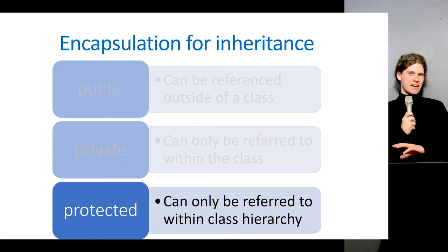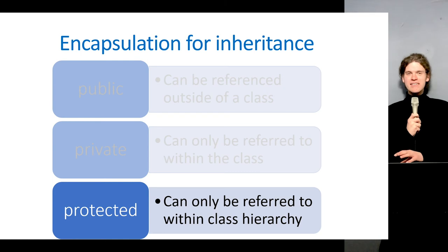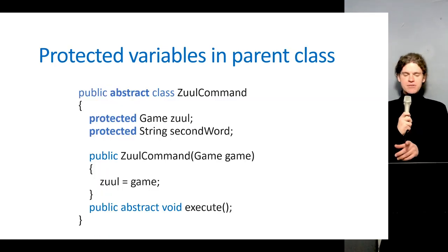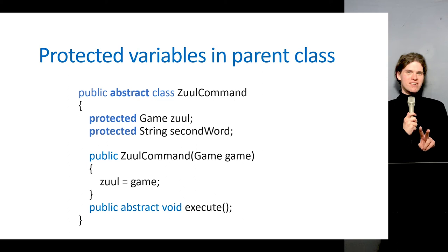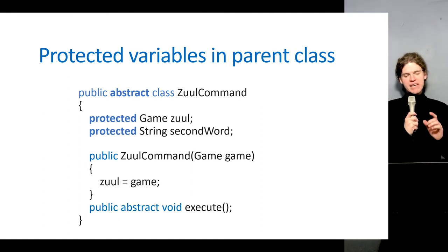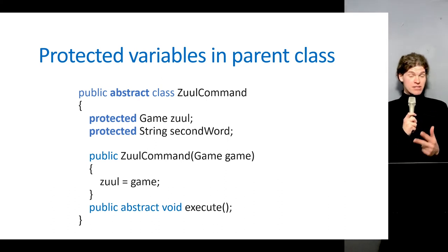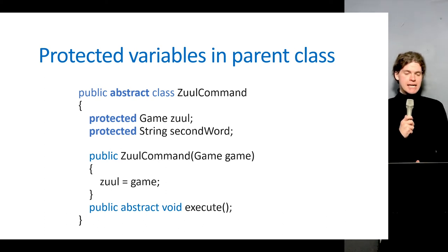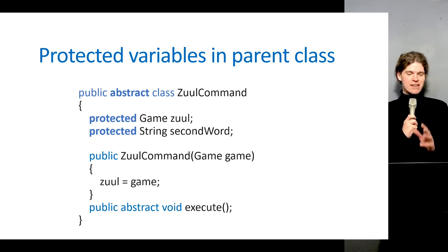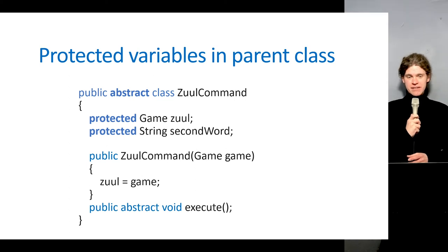Protected is a halfway house — it's public to the children and can be inherited, but private to classes outside of the hierarchy. That's why in the ZoolCommand parent class you'll notice two protected variables at the top. They're not public and not private — they're protected, meaning GoCommand, TakeCommand, and HelpCommand can inherit and refer to them, while classes outside the hierarchy cannot access them.